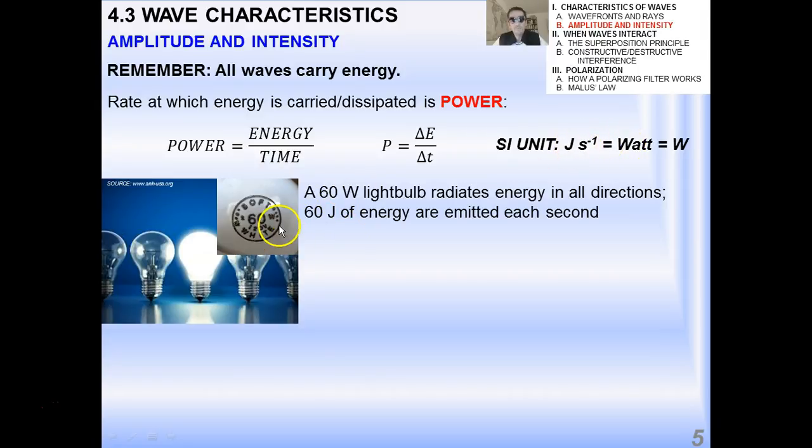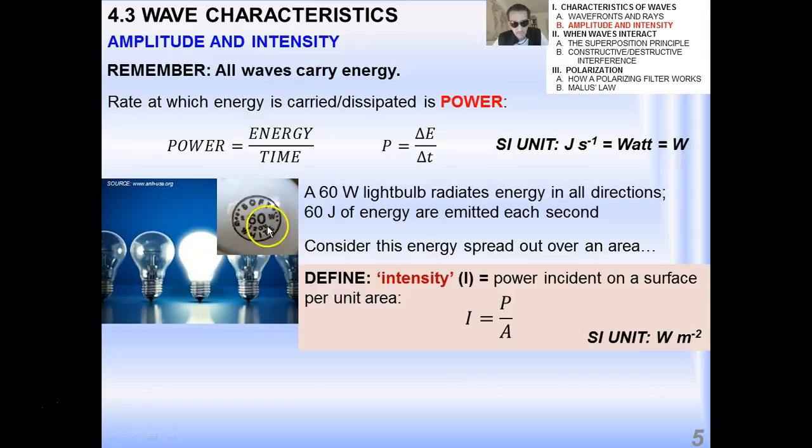Now, a 60-watt light bulb radiates energy in all directions. It's the energy in the form of electromagnetic radiation, which happens to be in the visible part of the spectrum, according to humans. So, what that means is that 60 joules of energy are emitted each second and spread out in all directions. That's what the 60-w means on the top of a light bulb.